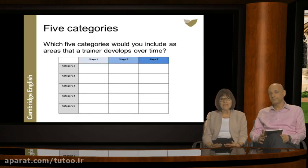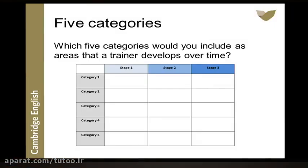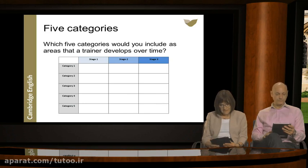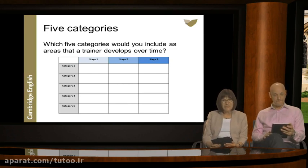Thinking about trainer skills and competencies — which categories would you include as general areas that trainers need to develop over time? Participants suggested: management skills, being innovative, professional development, observation, knowing your methodology, giving feedback and counselling, and reflection. You'll see in a moment that some of the categories you mention are the same as the ones we've decided on for the trainer framework.